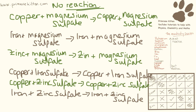For all the reactions where there was no reaction — copper and magnesium sulphate, iron and magnesium sulphate, zinc and magnesium sulphate, copper and iron sulphate, copper and zinc sulphate, iron and zinc sulphate — what we started off with is exactly what we end up with. Just because we mix two things together doesn't mean there has to be a reaction.